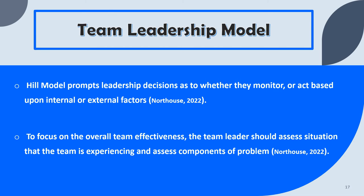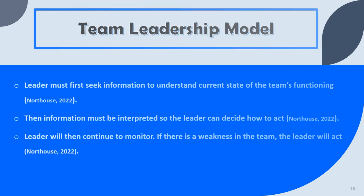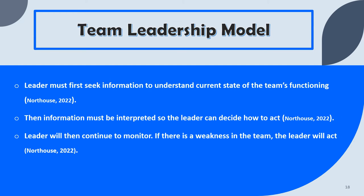The team leadership model: the Hill model prompts leadership decisions as to whether they should monitor or act based upon internal or external factors. To focus on overall team effectiveness, the team leader should assess the situation the team is experiencing and assess components of the problem. The leader must then seek information to understand the current state of the team's functioning, interpret that information to decide how to act, continue to monitor, and if there is a weakness in the team, act on that weakness.